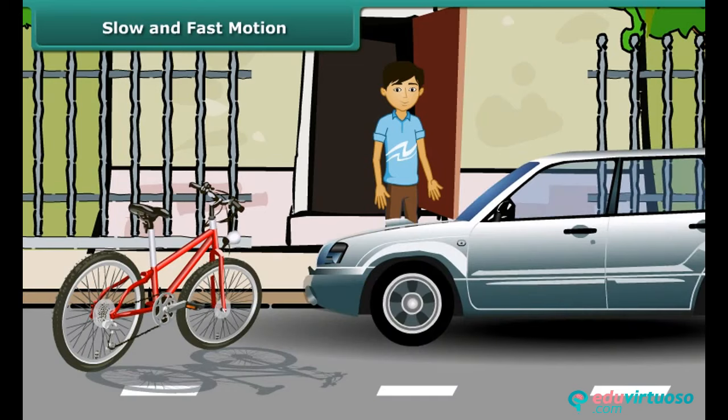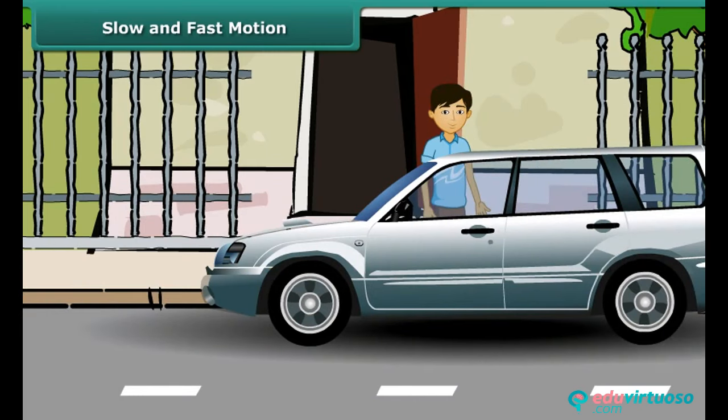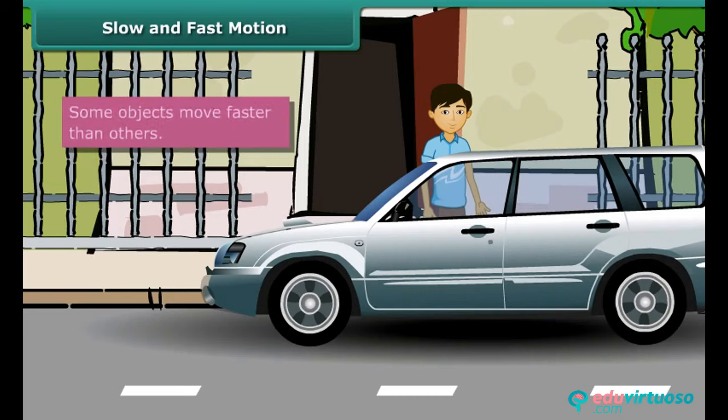What will you do? Correct! You will take a taxi because a taxi is faster than a cycle. So we can say that some objects move faster than others.